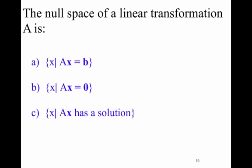So here would be a clicker question. The null space of a linear transformation A is: A) X such that AX equals B, B) X such that A times X equals 0, or C) X such that A times X has a solution. If you look at the previous slide, you can find the answer to that clicker question.